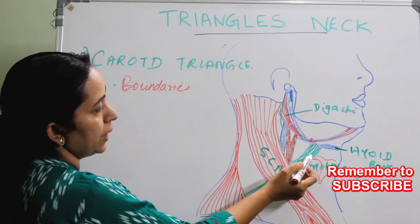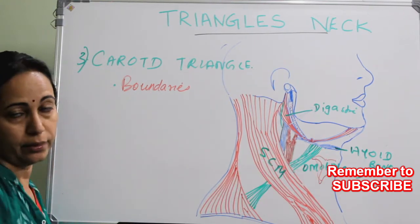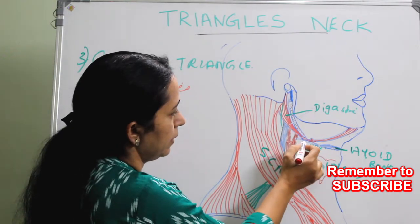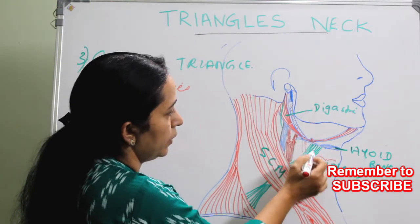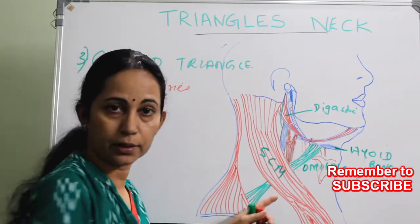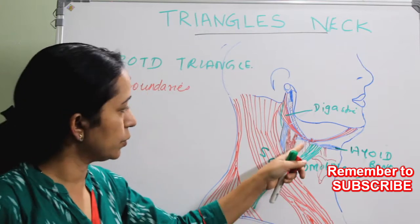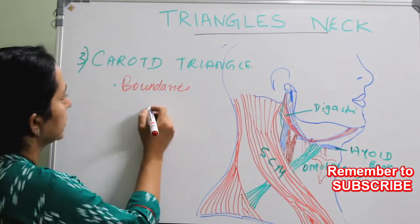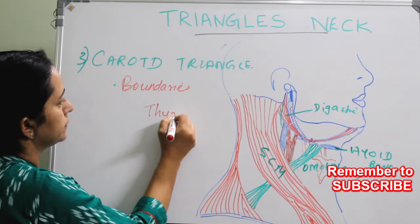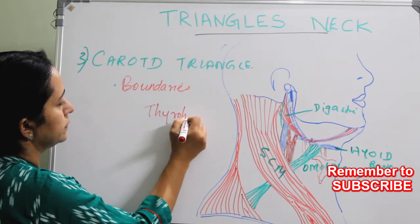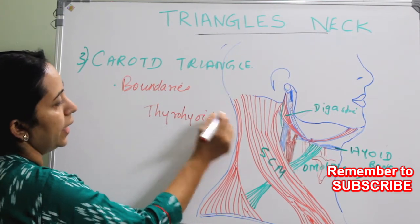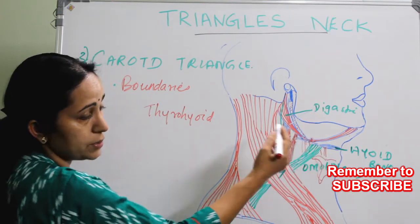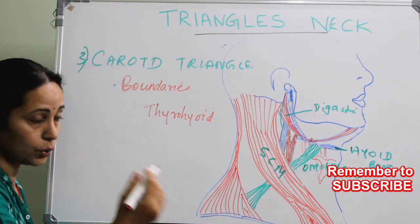From the thyroid to the hyoid, the muscle is the thyrohyoid muscle. So the thyrohyoid muscle forms one part of the floor. And here comes the tongue — from the hyoid to the tongue forms the hyoglossus.